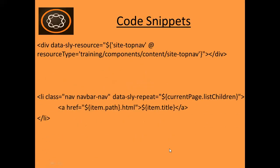I will be using this code to add the logic in our simple navigation component. First we will create a navigation component and we will include that navigation component in our page generating component using this script. Here you can see we are using data-sly-include to include our top navigation component, where the resource type is a path of the navigation component. And this code will be used to extract the child pages of the current page — we are using data-sly-repeat, extracting the children from the current page and looping over it.